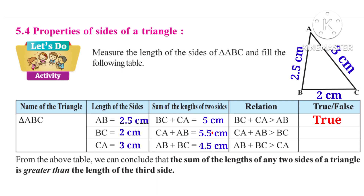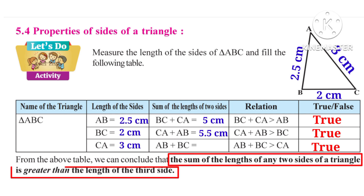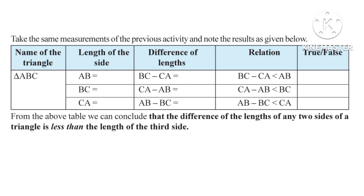Now also observe that 5.5 cm is greater than 2 cm, so we can say that CA plus AB is greater than BC. It is also a true statement. So from the above table we can conclude that the sum of the lengths of any two sides of a triangle is greater than the length of the third side.